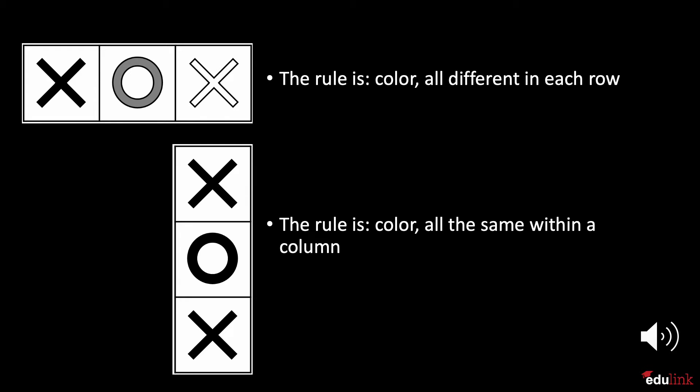However, there is also another pattern that we can see. For each space that we move to the right, the shape takes on a lighter color, horizontally following black, gray, white. The rule is color, all different in each row.